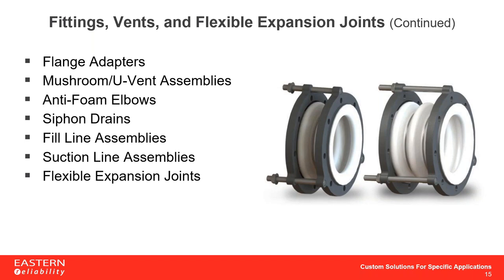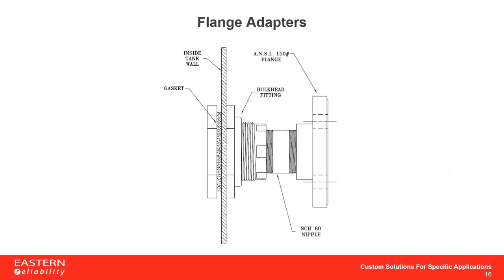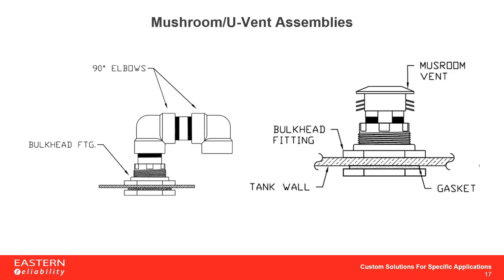Now we'll transition to more specific fitting accessories based on your design goals. The image on the right shows flexible expansion joints. Flange adapters can be easily added onto almost any of the previous fittings discussed, and they're available in many different materials — CPVC, PVC, or polypropylene — to match the type of fitting you have. ASVIN can also provide tanks with mushroom vent assemblies or a U-vent assembly if the tank is not going to be vented outside the building, so you don't have to source the vent yourself — the tank comes installed with them already.